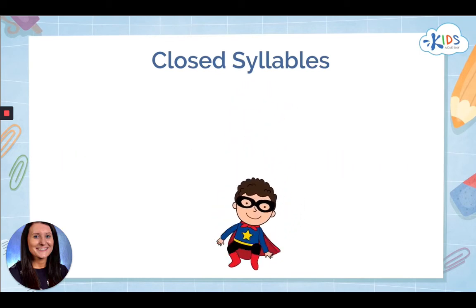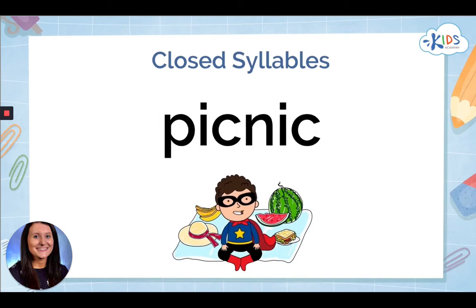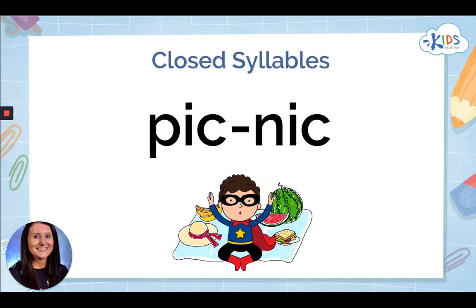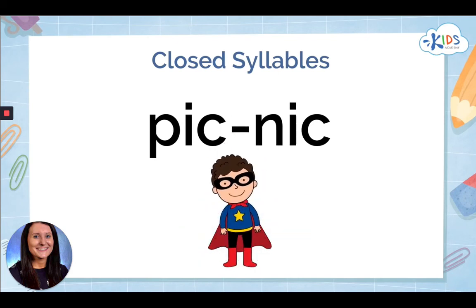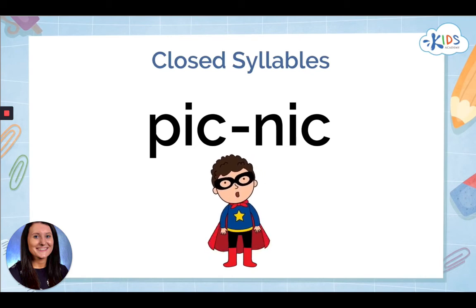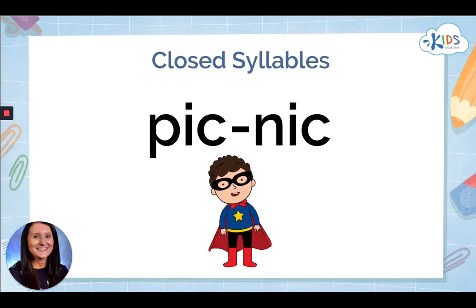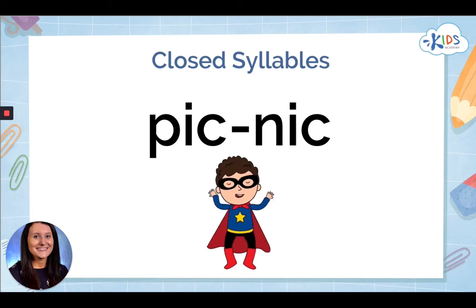Let's try another one. We can see that there are two vowels in this word, separated by two consonants, so there are probably two syllables. If I divide the two syllables — pick and nick — I can see that those are both closed syllables and probably have short vowel sounds: pick, nick. We can use this strategy to decode longer words as well.